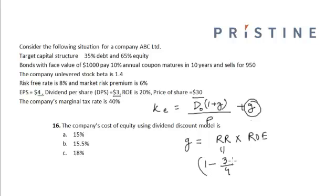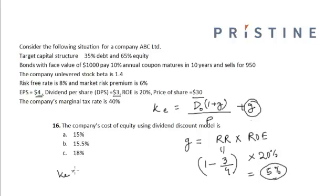My retention rate will be 1 minus dividend payout ratio. My dividend payout ratio will be $3 divided by $4, because my earnings per share is $4 and my dividend per share is $3. The ROE is 20%, so my growth rate is 5%. Therefore, my cost of equity is equal to $3 into 1.05 divided by $30, plus 0.05.